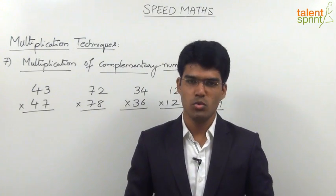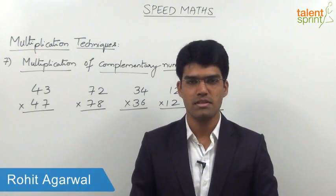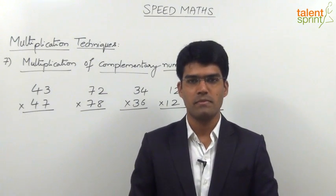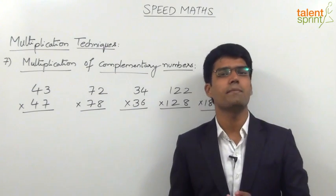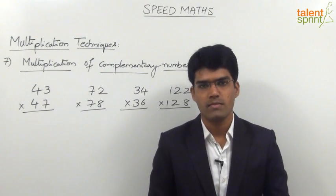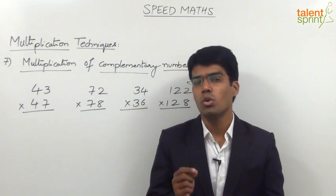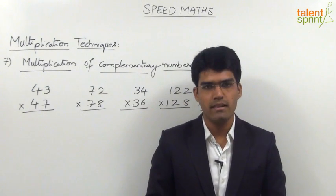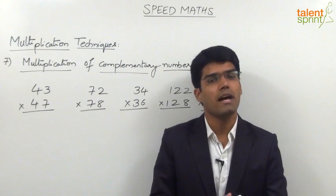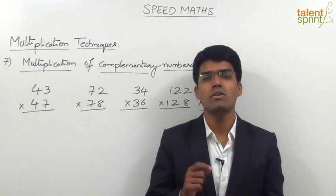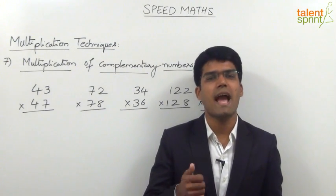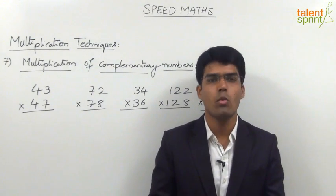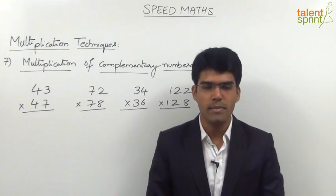After learning about the multiplication of two-digit numbers in the three-step procedure, let us now see how to multiply complementary numbers. First of all, let us understand what is meant by complementary numbers. Complementary numbers are those where the sum of the units places is equal to 10 and the remaining part of the numbers are equal. So any two numbers where the units place adds up to 10 and the tens place or the remaining part of the number is equal are referred to as complementary numbers.